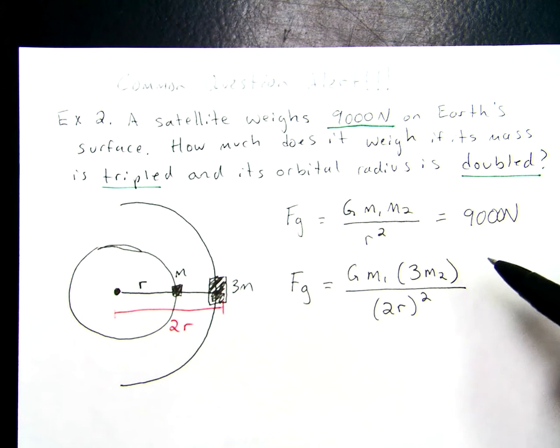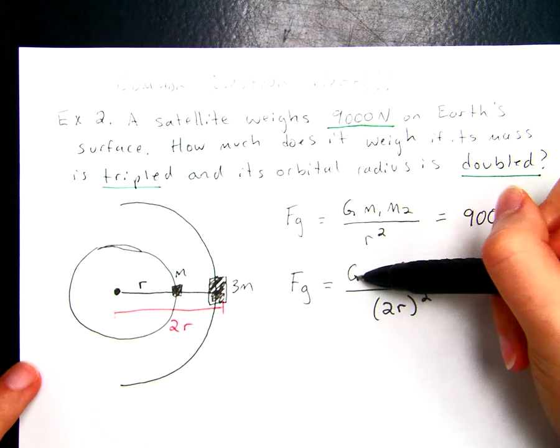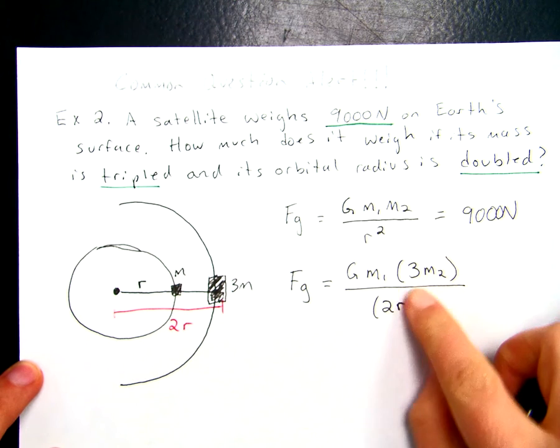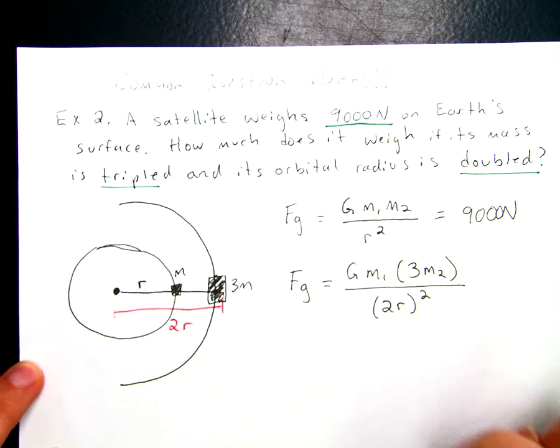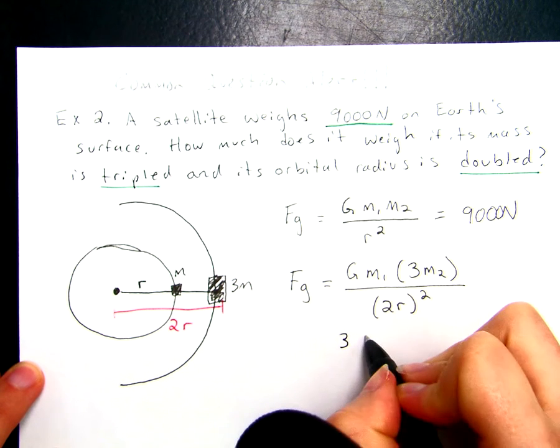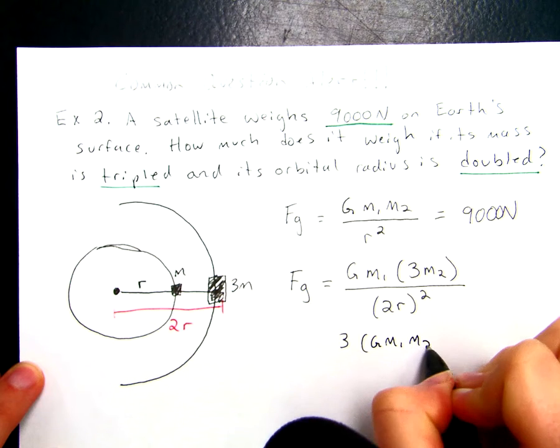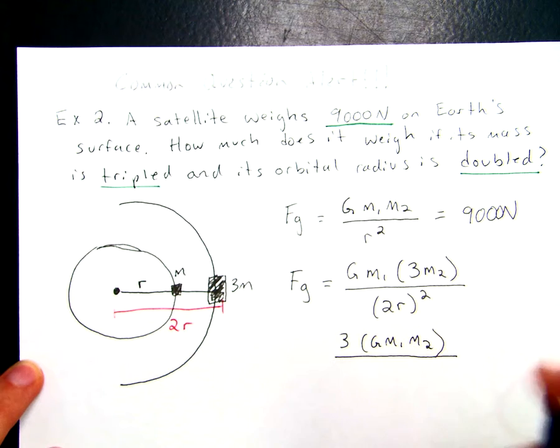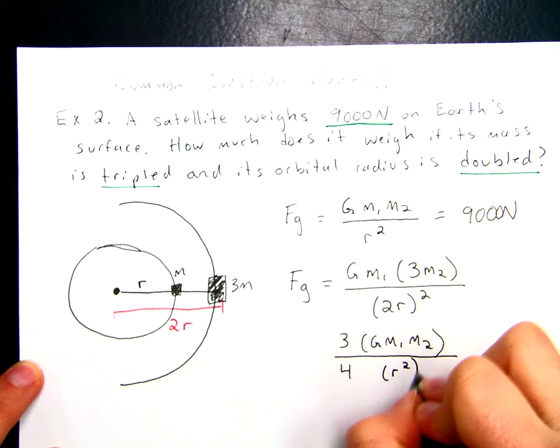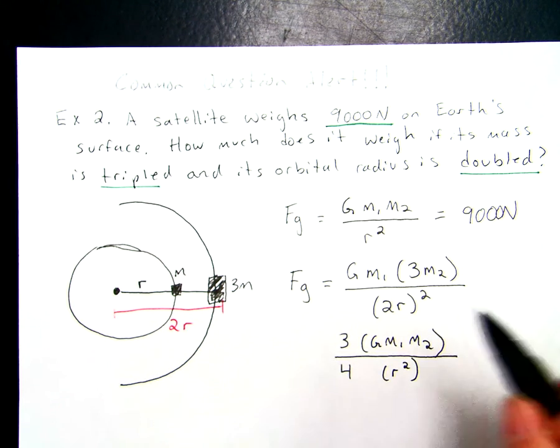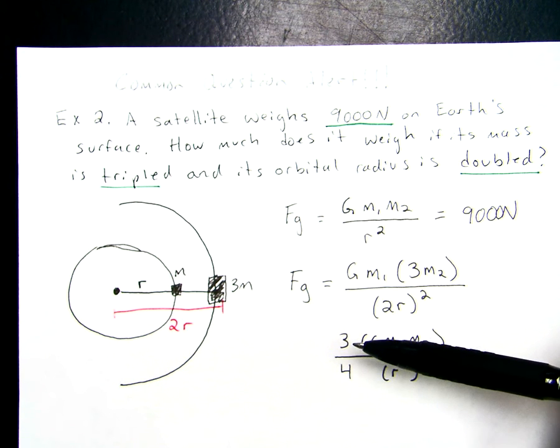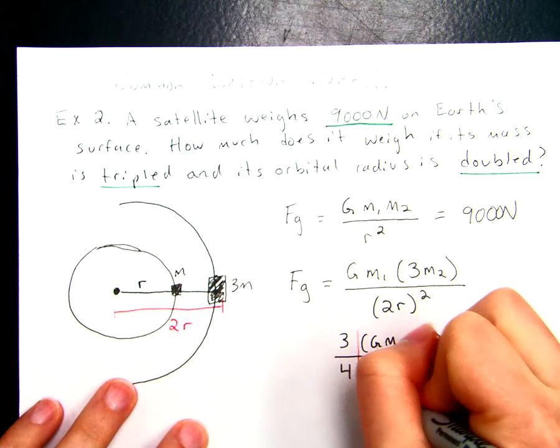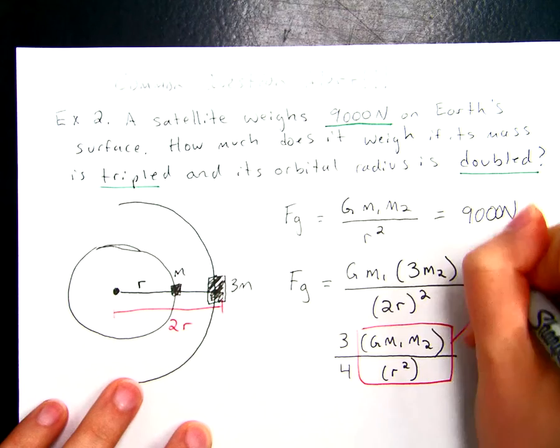We still have G times m1, which is the Earth. We triple our satellite, and we double our radius, but we square this. Now, what I see when I look at this problem: the g's match, the m's match in both cases, and the r's match in both cases. I just have these weird factor numbers. Well, I can factor those out of my problem. I can take the 3 out of the top and rearrange this, and I can take this 2 squared value out. If I take 2 squared out, it becomes 4 times my radius squared. Now, what I've essentially done is just rearrange the formula. So, now I've got 3 over 4 multiplied by this.